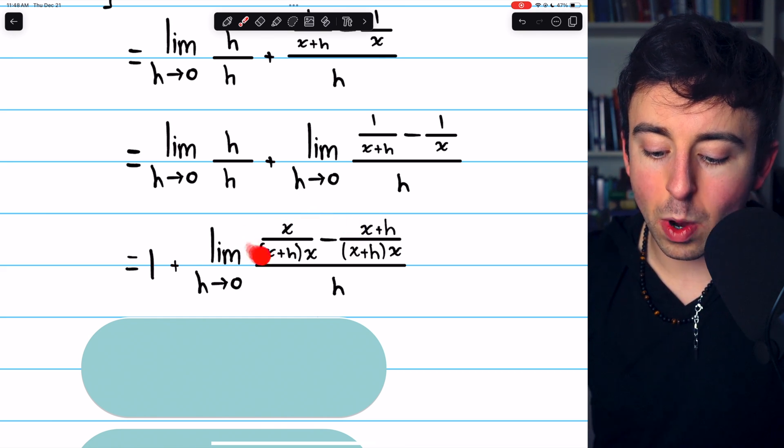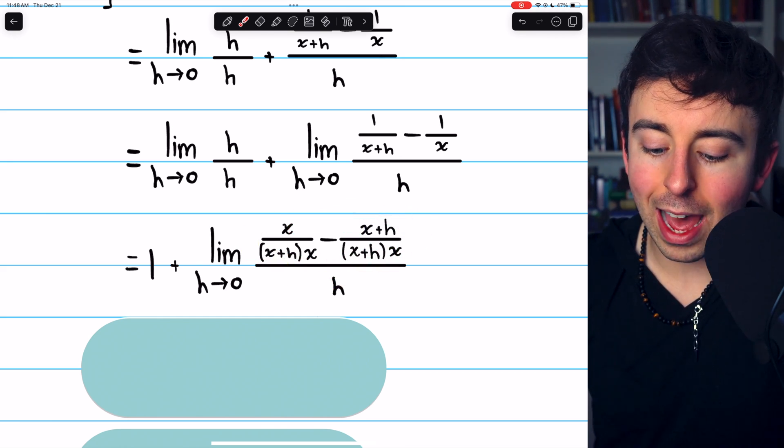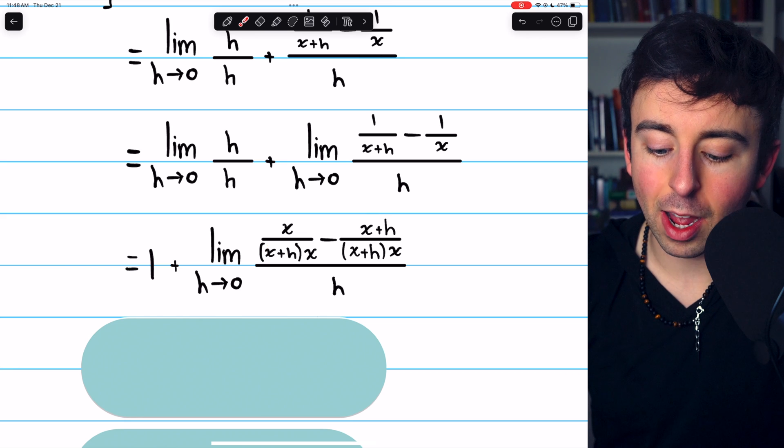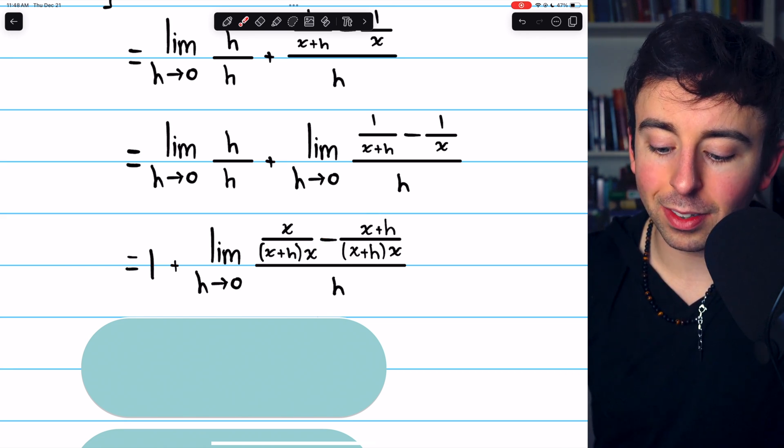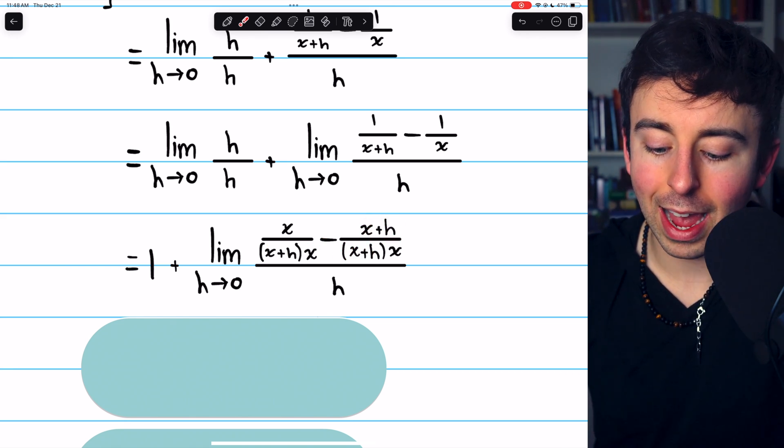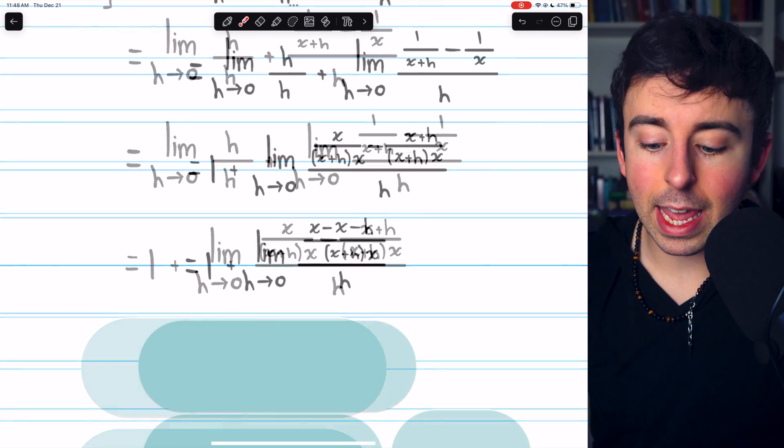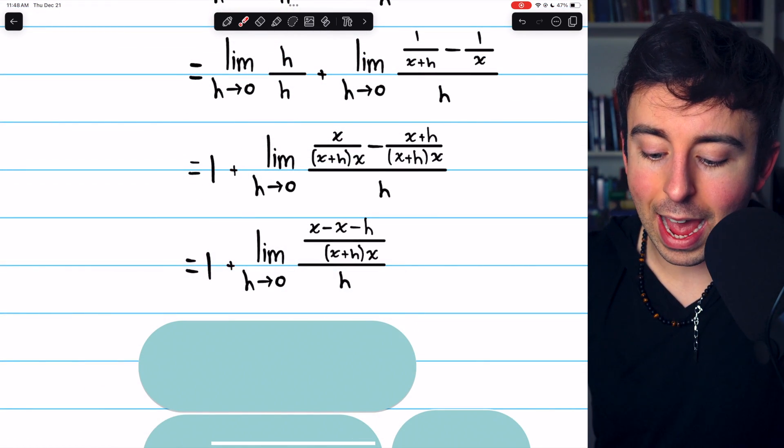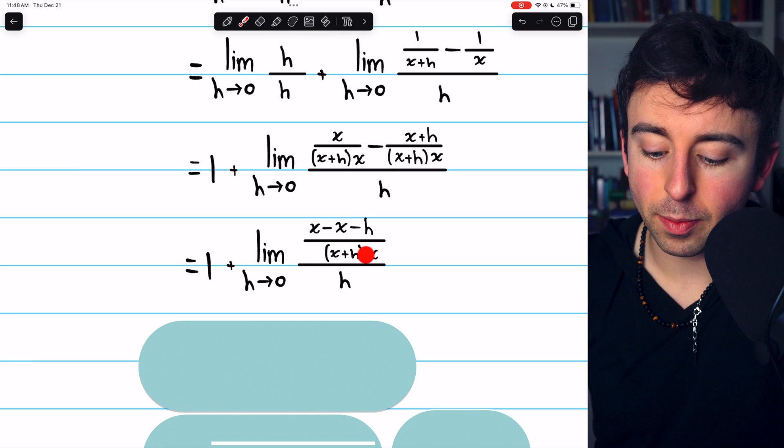Now you can see that they do have common denominators. We have x over x plus h times x, minus x plus h over x plus h times x. This is all still over h.